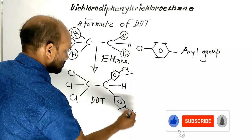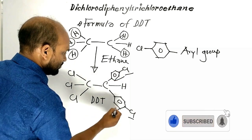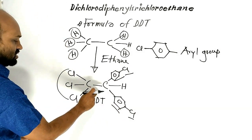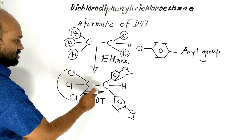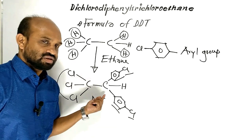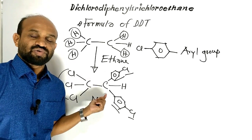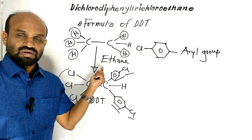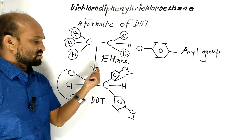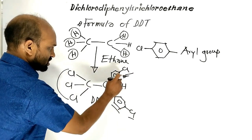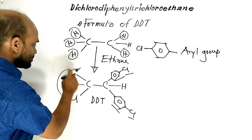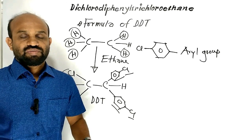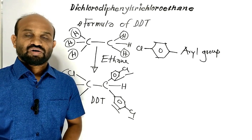Then the compound obtained is called DDT — dichloro diphenyl trichloroethane. This compound is derived from ethane, which is why its name is dichloro diphenyl trichloroethane. This is the chemical formula of DDT.